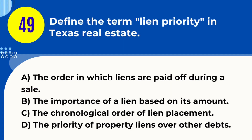Question 49. Define the term lien priority in Texas real estate. A. The order in which liens are paid off during a sale. B. The importance of a lien based on its amount. C. The chronological order of lien placement. D. The priority of property liens over other debts. Answer: A. The order in which liens are paid off during a sale. Explanation: Lien priority in Texas real estate refers to the order in which liens on a property are paid off during a sale, typically determined by the chronological order of their recording.